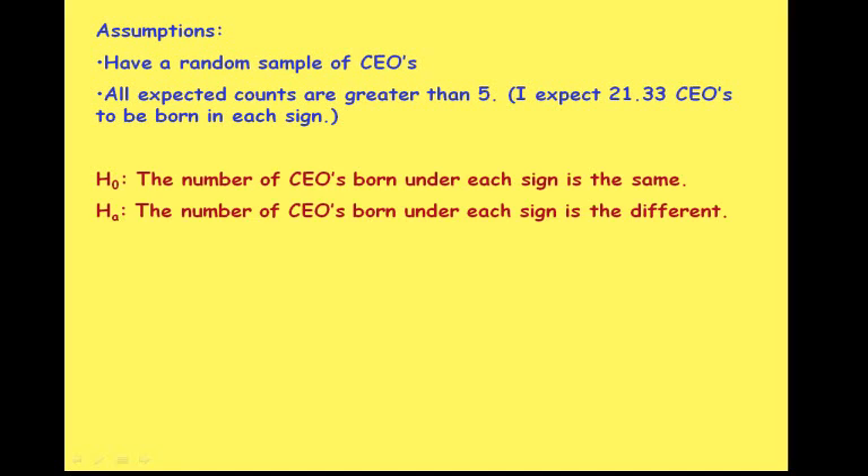So, here's our assumptions. We have a random sample of CEOs. The second one is that all expected counts are greater than 5. The expectation was 21.33 CEOs to be born in each sign. The null and the alternate: the number of CEOs born under each sign is the same. The number of CEOs born under each sign is different. So you can see I wrote that in words instead of in symbols, and I provided context to the problem, the number of CEOs born under each sign.